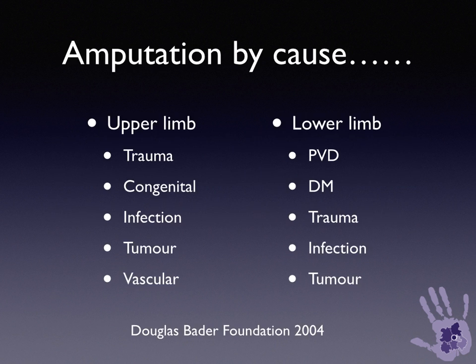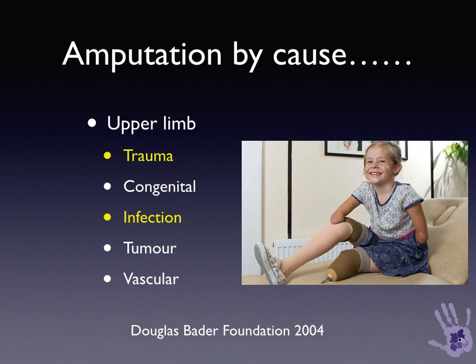When we look at upper limb amputation by cause, it's very different from the lower limb, where the high scorers are peripheral vascular disease and diabetes. In the upper limb, it's predominantly trauma and congenital loss, and there are infective losses as well from meningitis.